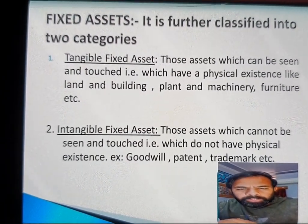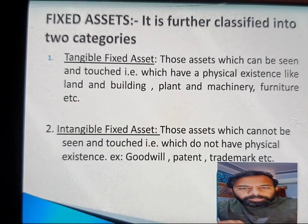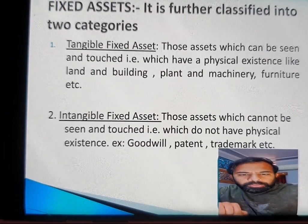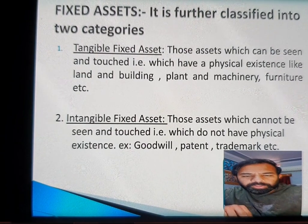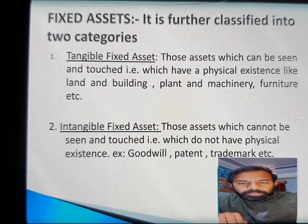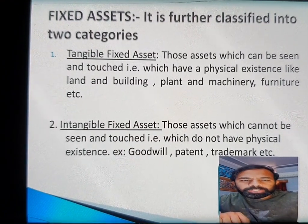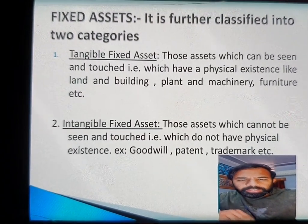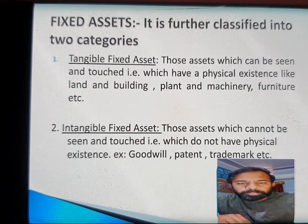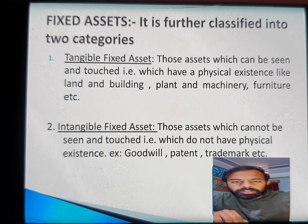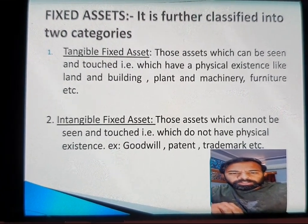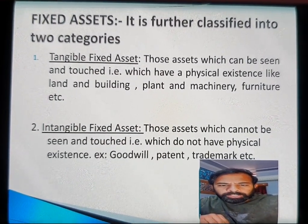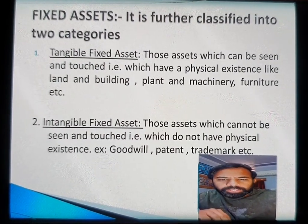Intangible fixed assets are those assets which cannot be seen, felt, or touched — those which do not have any physical existence. Tangible means assets with physical existence; intangible means assets without physical existence. Examples of tangible fixed assets include land and building, plant and machinery, furniture, and motor vehicles. Examples of intangible assets include goodwill, patent, trademark, recipes, and formulas.